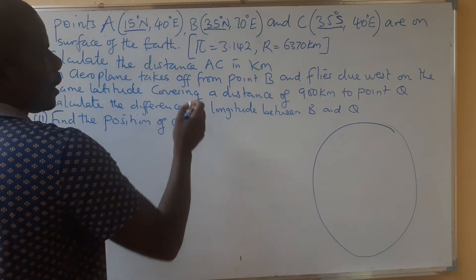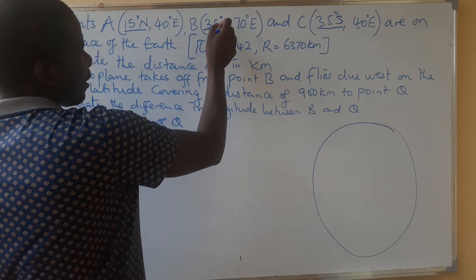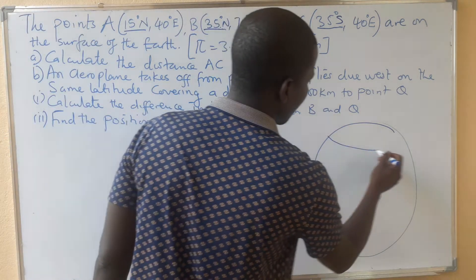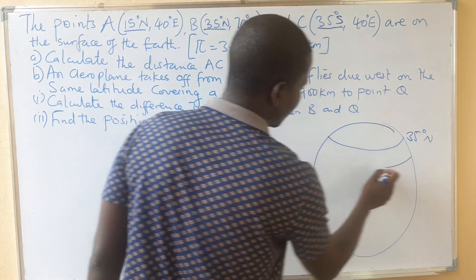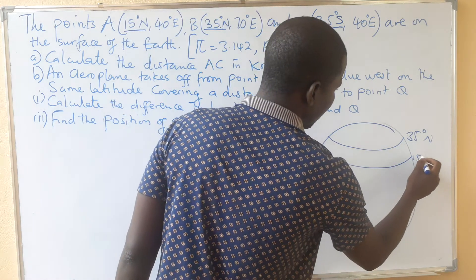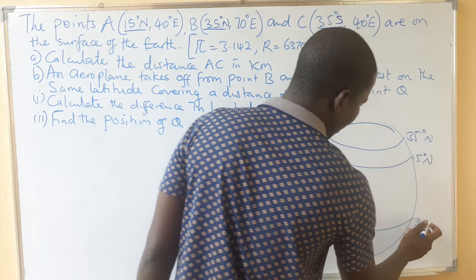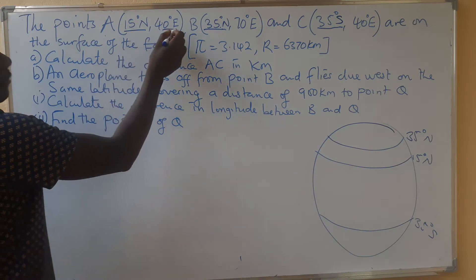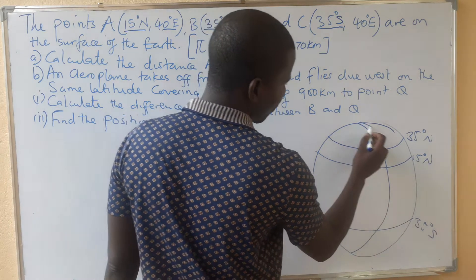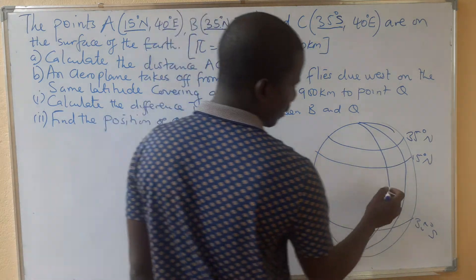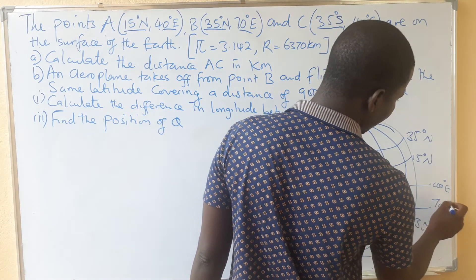So we draw the latitudes. You know that the north — 35 will be on top of 15 because they reduce as we come downward. This is 15 degrees north, 35 south will be here. Then for the longitudes we have 40 and 70. 40 is supposed to come first before 70. So this is our 40 degrees east and this is our 70 degrees east.